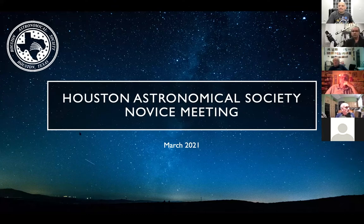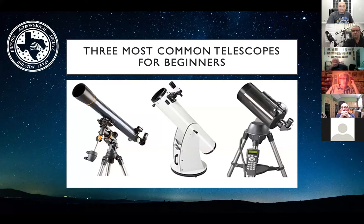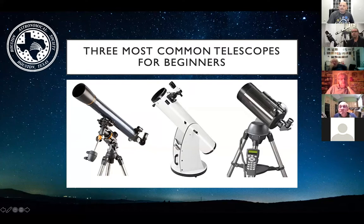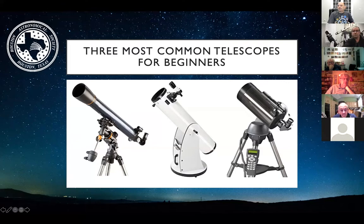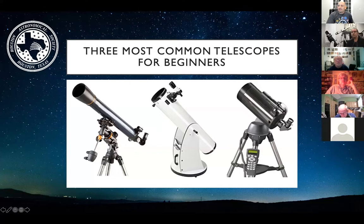We have three types of telescopes to go through today. On the left is a typical refractor — a straight-through tube with lenses, no mirrors other than in the diagonal. In the middle is a Newtonian telescope on a Dobsonian mount, which has a mirror in the back and a secondary mirror where the light is reflected out the eyepiece. The third style is a Cassegrain — shorter in overall length but typically with a longer focal length, meaning the pathway that light travels is much longer.